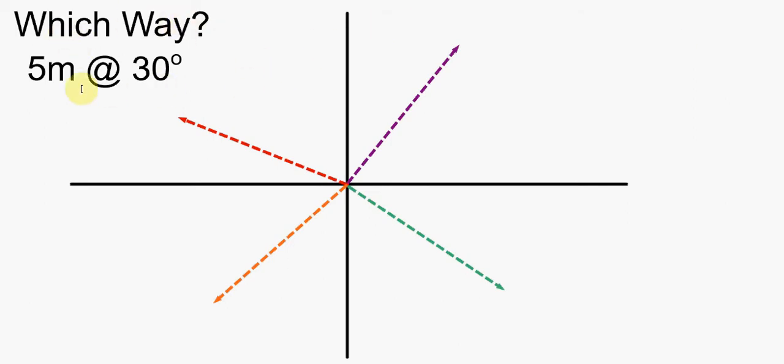I could have a vector and say it's five meters at 30 degrees, and our problem becomes well how do you reference the 30 degrees part? What's the 30 degrees in reference to?